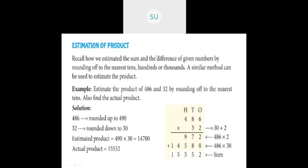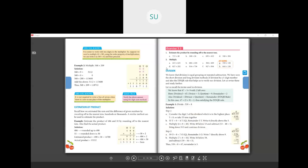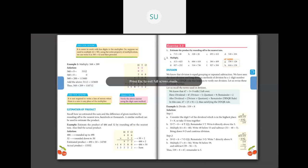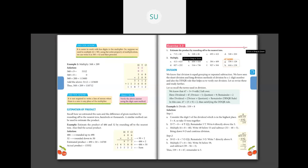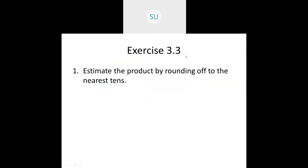Now we will solve a few problems. Open page 121 in your textbooks — Exercise 3.3. Question 1 asks to estimate the product by rounding off to the nearest tens. There are four problems, and we will do all four. Please solve and copy them into your classwork books.